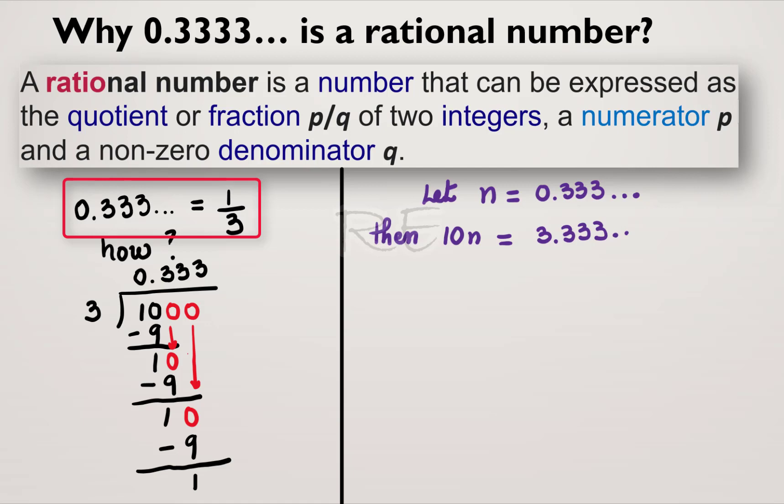Notice the repeating cycle is still attached to the number. Now we're going to subtract n from it on both sides. One side is going to be negative 1n. The other side will be negative 0.333. We want to get rid of the cycle. Now, 10n minus 1n will be equal to 9n. And 3.333 minus 0.333 will be equal to 3.